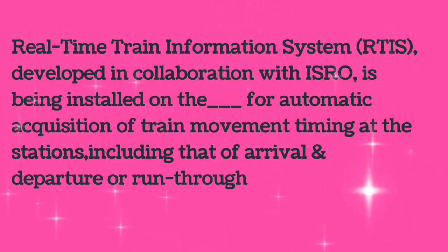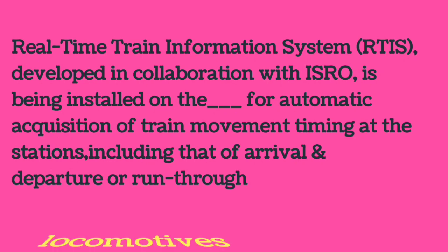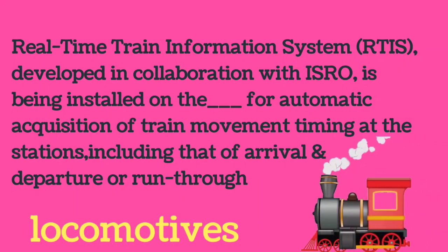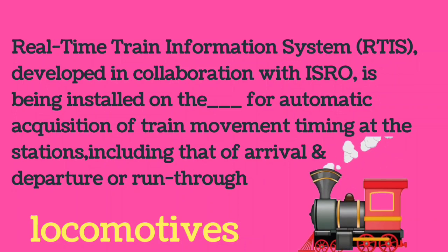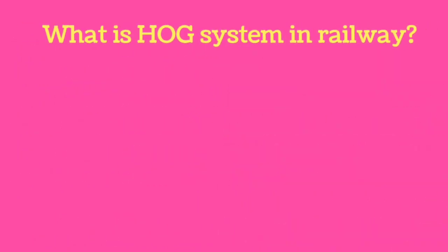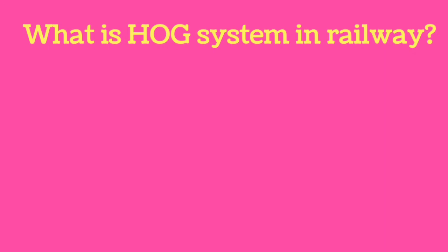The Real Time Train Information System (RTIS), developed in collaboration with ISRO, is being installed on locomotives for automatic acquisition of train movement timing at stations, including arrival and departure of run-through trains.